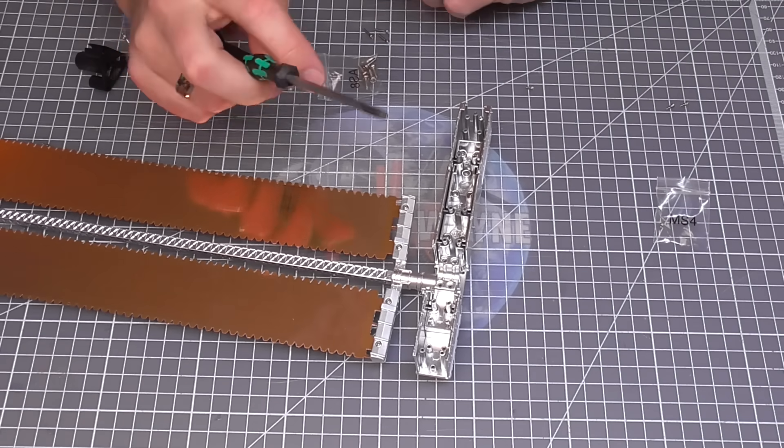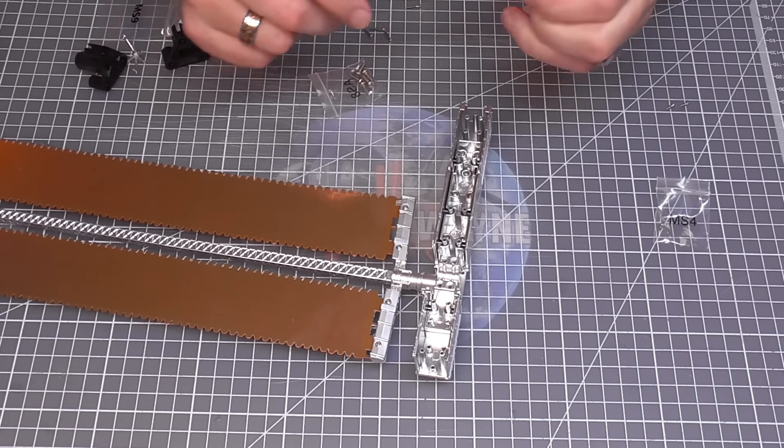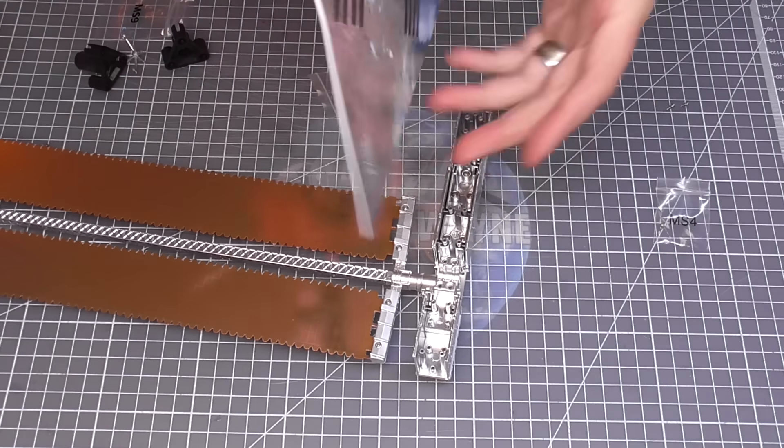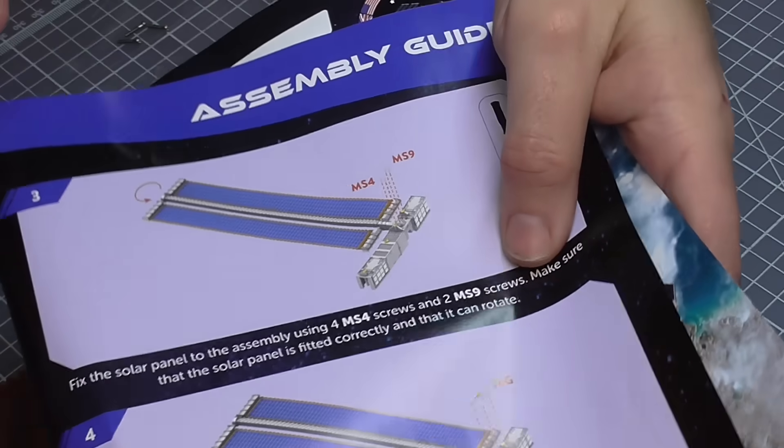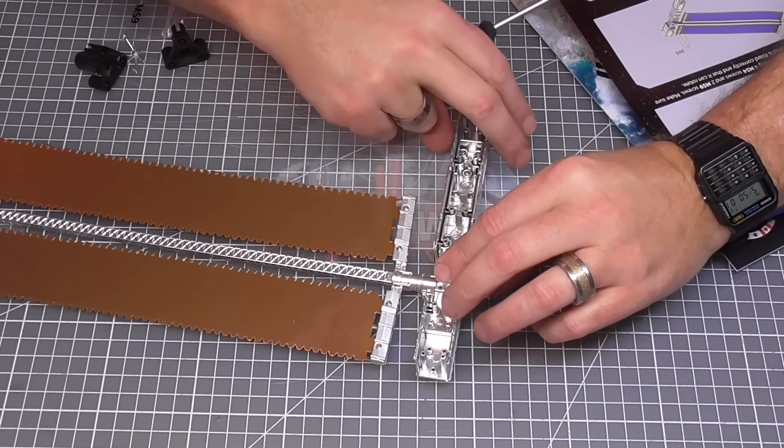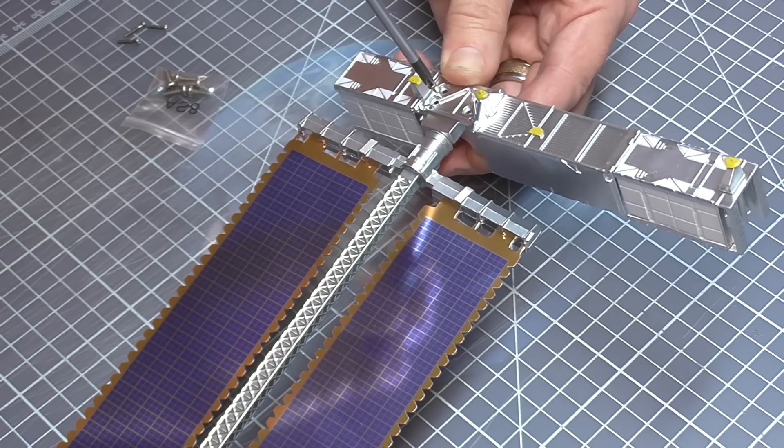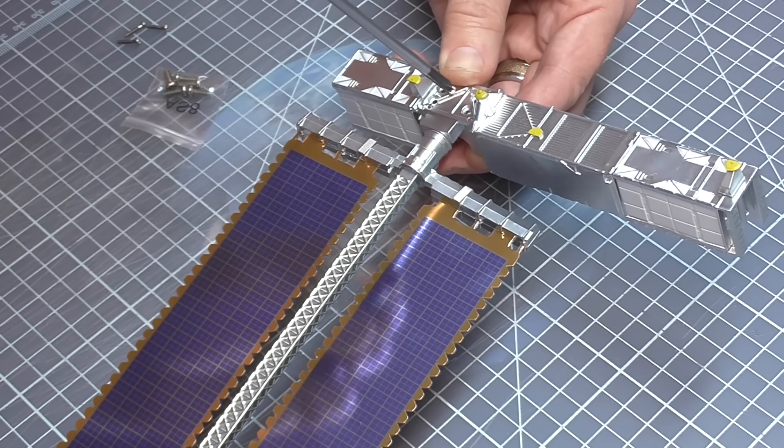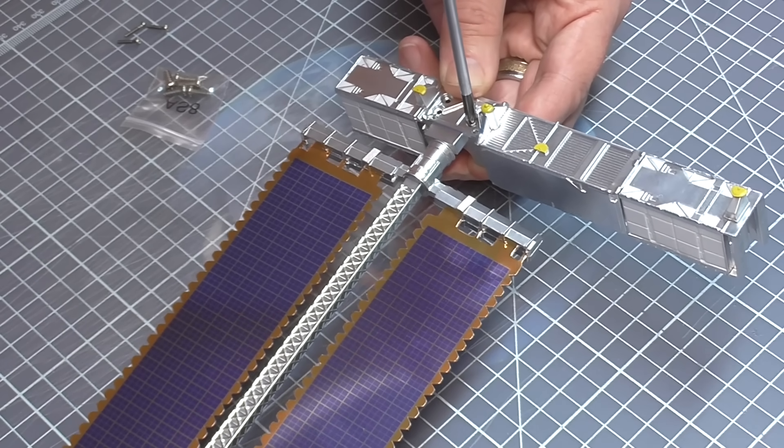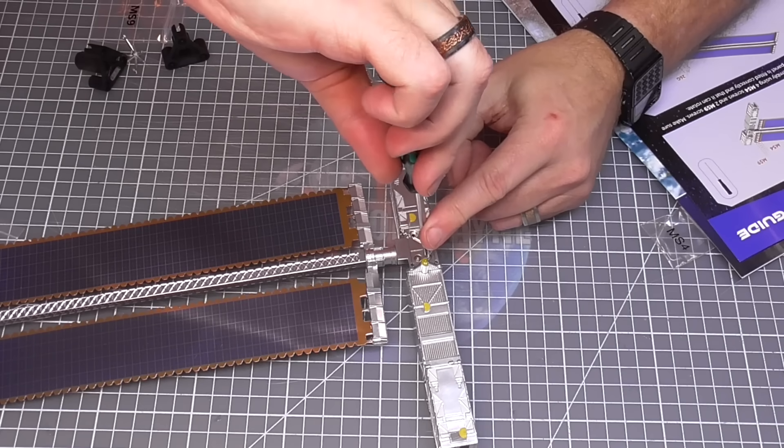So I'm going to be holding that in with four MS4 screws and two MS9. Now I don't know because the instructions aren't really good here. Let me just show you the instructions. Check this out. Look. You figure it out. I don't know. I'm guessing we need to flip it over. It says four MS4 screws. Let me put one of the MS4 screws into this side here. So there's one there. At least that's going to hold it in.